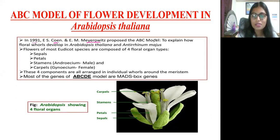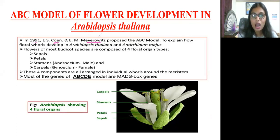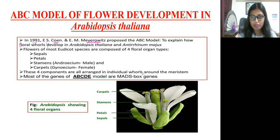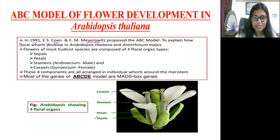Why is it called the ABC model? These two scientists explained how floral organs develop in Arabidopsis thaliana. In a flower, you can see there are four whorls. The first whorl is the sepal, the second is the petal, the third is the stamen, and the fourth is the carpel.